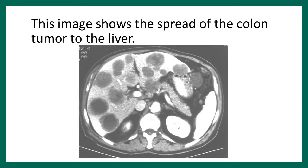This is how a CAT scan shows the tumor. The large structure is the liver, and the black areas within it represent tumorous areas — liver metastases.